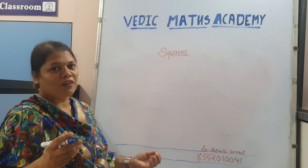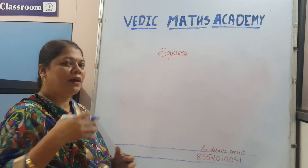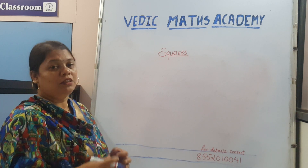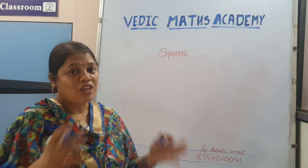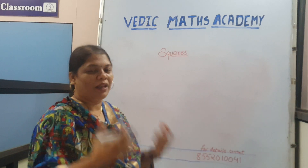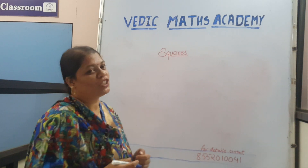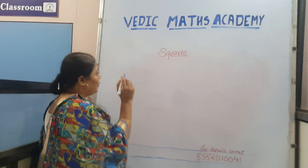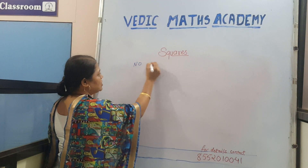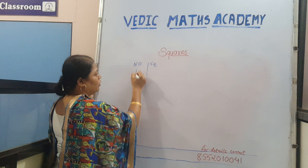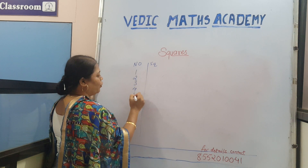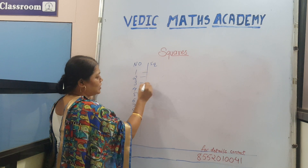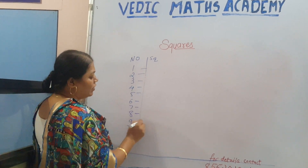The number of squares we need to know: how many single-digit squares are there? 1, 2, 3, 4, 5, 6, 7, 8, 9. That's it — just these numbers, and you can find the square of any number using this method.